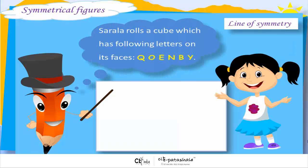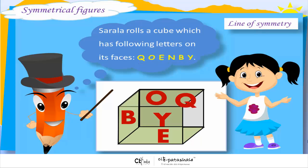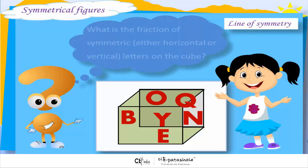Sarla rolls a cube which has following letters on its faces: Q, O, E, N, B, Y. What is the fraction of symmetric letters on the cube, either horizontal or vertical?